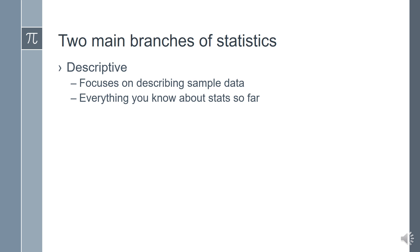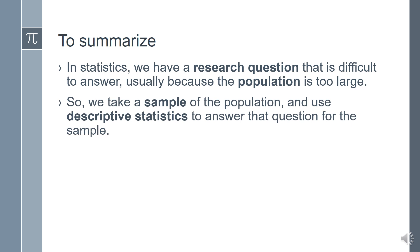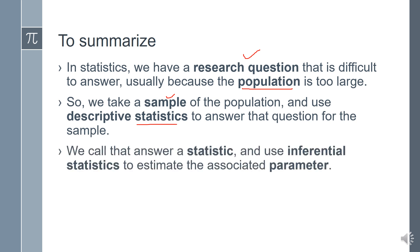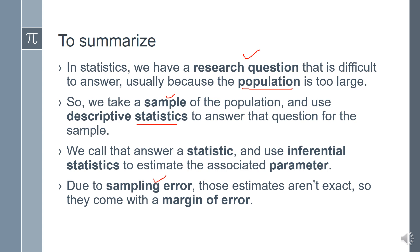There are two main branches of statistics. One is descriptive. The other is inferential. Let's summarize a little bit of what we've talked about so far, and then we're going to get into some example problems. We have a research question. Difficult to answer. Remember the question about what is the lifetime of a cell phone? From our population, we take a sample. We use descriptive statistics to answer that question for the sample. We call that answer a statistic and use inferential stats to estimate the associated parameter. Due to sampling error that we just talked about, those estimates aren't exact, so they do have what is called a margin of error.